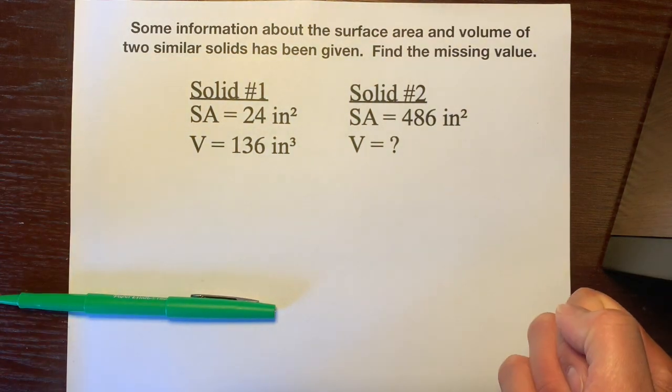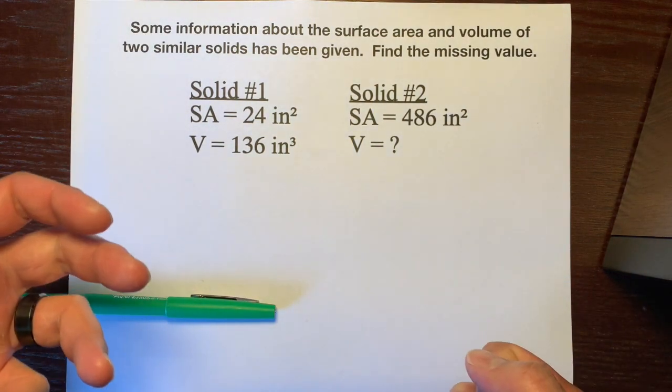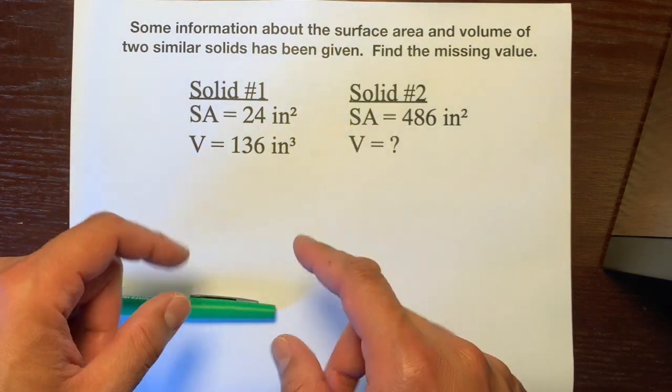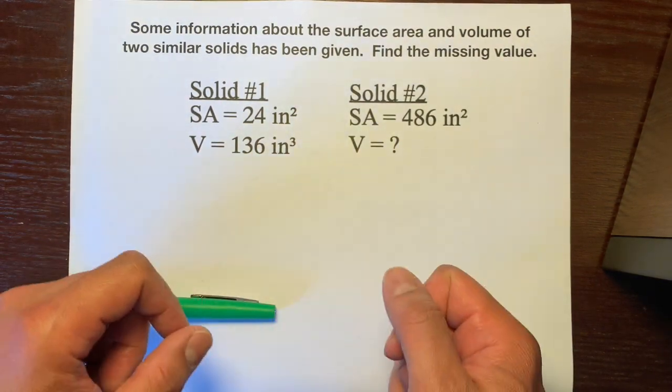Hello, this is Mr. Kinyanola, and this is another example on how to find the missing value when you're given information about two similar solids.